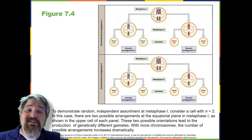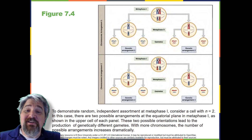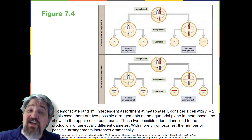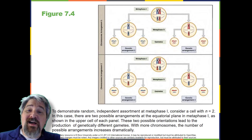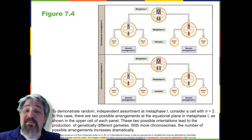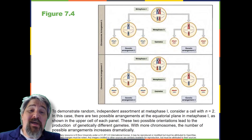There are two possible orientations for each tetrad, so the possible number of alignments equals 2 to the n, where n is the number of chromosomes per set. Humans have 23 chromosome pairs, which results in over 8 million possibilities. This number does not include the variability previously created by crossing over. Given these two mechanisms, it is highly unlikely that any two haploid cells resulting from meiosis will have the same genetic composition. To summarize the genetic consequences of meiosis I: maternal and paternal genes are recombined by crossover events during prophase I, and the random assortment of tetrads at metaphase produces a unique combination of maternal and paternal chromosomes that will make their way into the gametes.